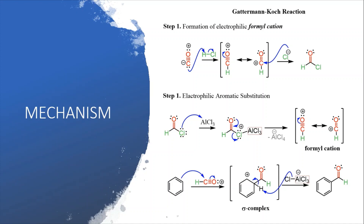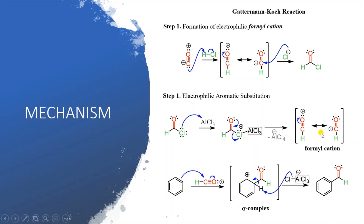The chlorine shifts toward the Lewis acid — AlCl₃ is electron-deficient, so it extracts the chlorine from the formyl chloride, leaving behind the formyl cation. There are two resonating forms of the formyl cation that coexist. The pi electrons of the benzene ring then attack on this formyl cation.